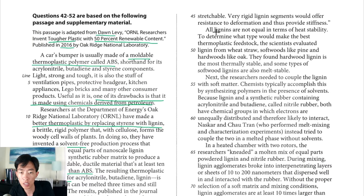The next paragraph they say all lignins are not equal in terms of heat stability. And then they have to decide what's the best material to combine with lignin. And it says the scientists evaluated lignin from wheat straw, softwoods like pine and hardwoods like oak. They found hardwood lignin is the most thermally stable. So that's going to be the best one. And some types of softwood lignins are also melt stable.